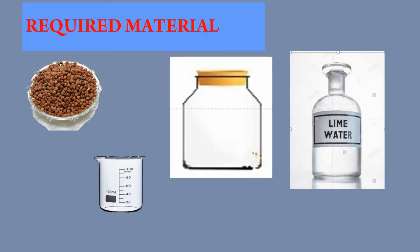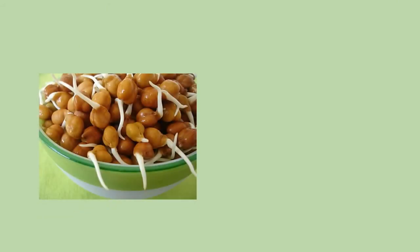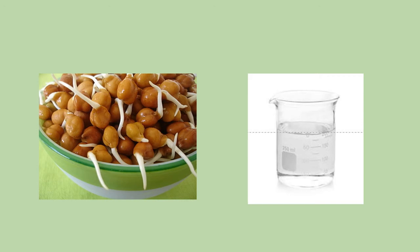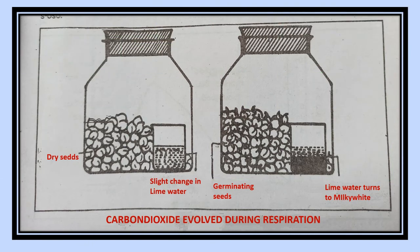Soak the seeds in water before performing the experiment. Keep the germinated seeds in a glass jar. Take a small beaker and fill three-fourths of it with lime water. Insert the beaker into the glass jar carefully. Close the glass jar tightly. Make a similar set with unsprouted seeds and leave them undisturbed for 2 days. During this time, observe the color of lime water in both sets. In which set does the color change faster, and why?